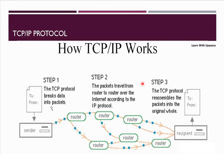Now, looking at the diagram for a TCP/IP example: in the first step, TCP breaks the data into packets. In the next step, the packets travel from router to router across the internet according to IP protocol, following the address of each packet. In the third step, TCP reassembles the packets into the original form and sends it to the recipient.